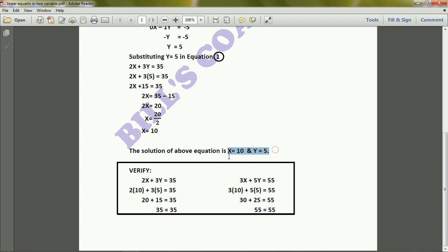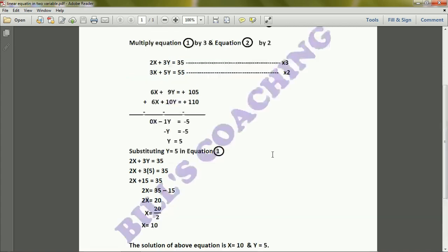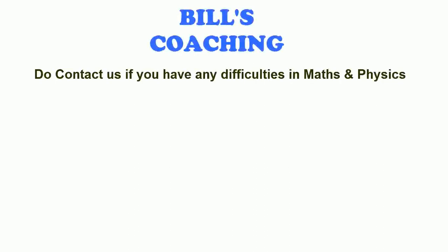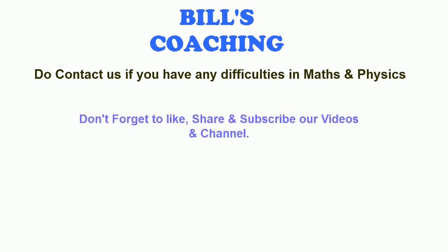So the solution of the above equations is x = 10 and y = 5. For exam purposes, you don't have to show the verification — solving up to finding x and y is more than enough. Hope you understood this problem and method. If you have any difficulty in math and physics, you can contact us. Please like, share, and subscribe to our channel. This was Bilal from Bil's Coaching — thank you.